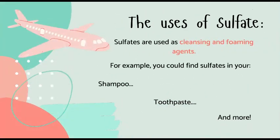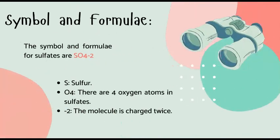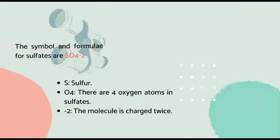The uses of sulfates: sulfates are commonly used as cleansing and foaming agents. For example, you could find sulfates in your shampoo, toothpaste, and more. The symbol for sulfates is SO4²⁻. S represents sulfur, O4 represents the four oxygen atoms in the sulfate, and 2 represents the fact that the molecule is charged twice.